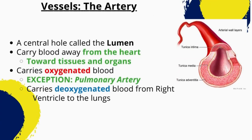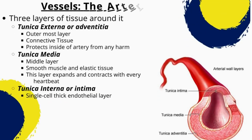Arteries are blood vessels that carry oxygen-rich blood away from the heart and distribute it to the rest of the body. The central hole of arteries, called the lumen, carries oxygenated blood — except the pulmonary artery, which carries deoxygenated blood from the right ventricle to the lungs. The arterial wall is composed of several layers of tissue. The innermost layer, the tunica intima, is composed of a thin layer of smooth muscle cells and an inner layer of endothelium, which lines the interior of the blood vessel.